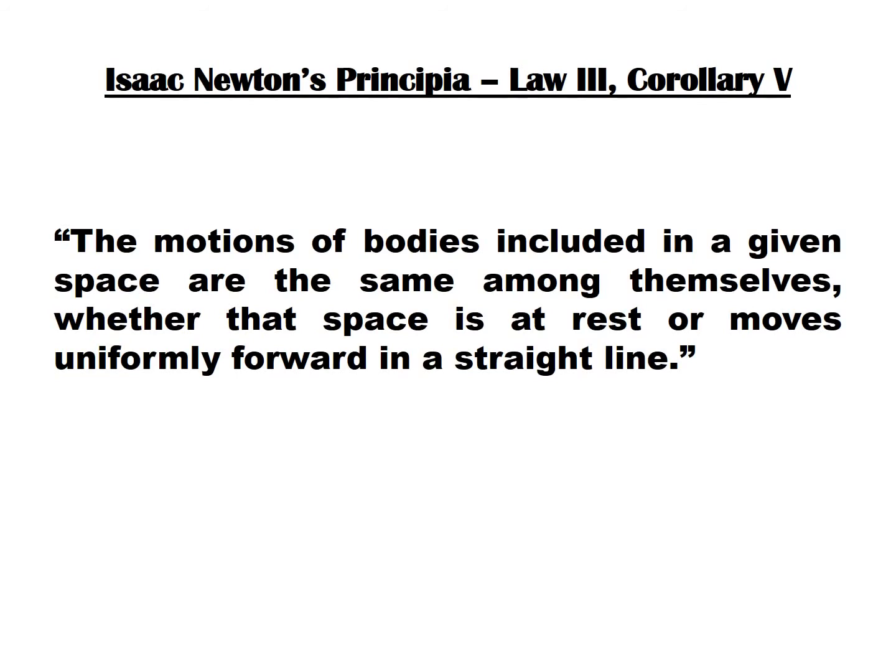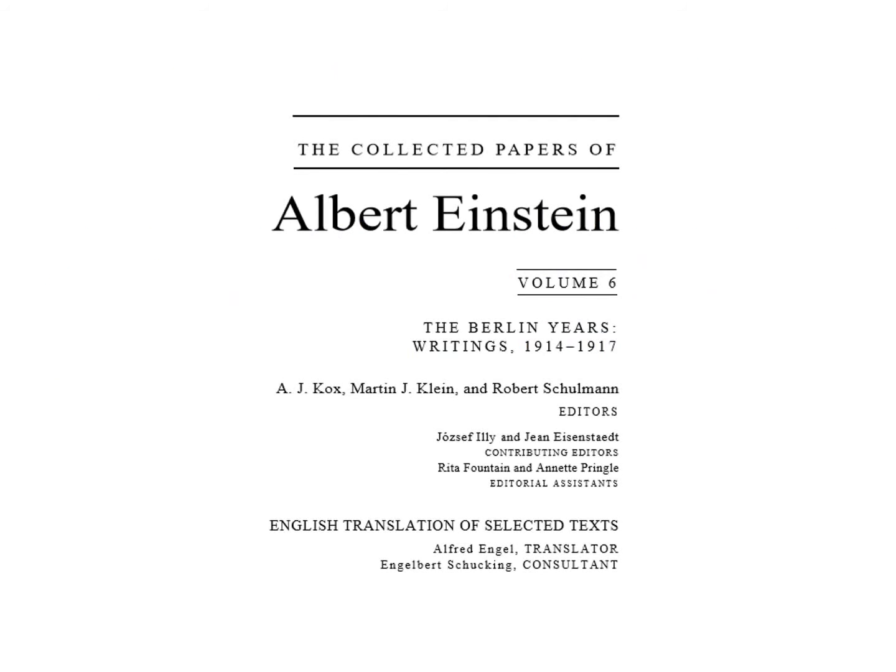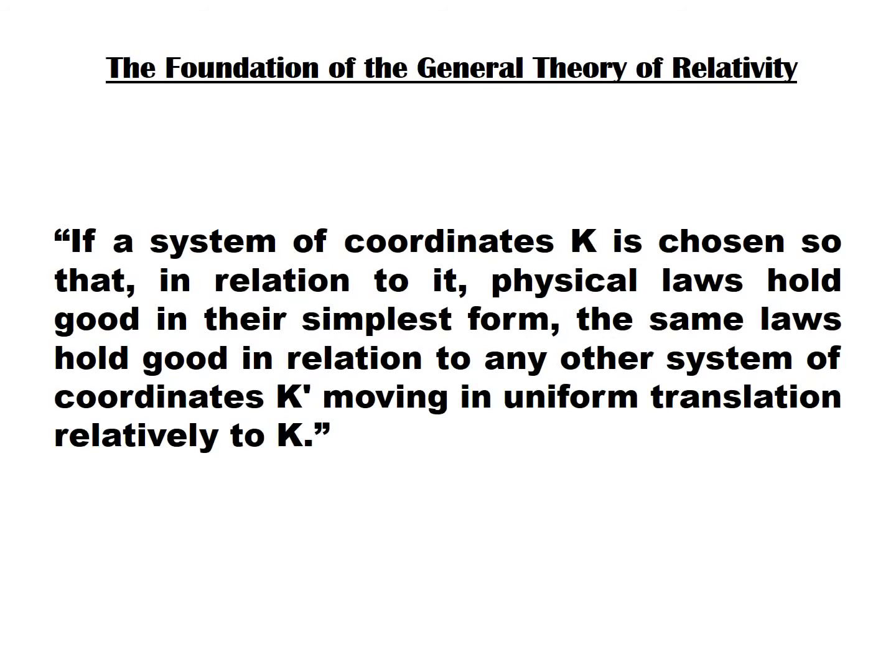Einstein himself provides several definitions in his various papers. In his paper, The Foundation of the General Theory of Relativity, Einstein gives this description: if a system of coordinates k is chosen so that, in relation to it, physical laws hold good in their simplest form, the same laws hold good in relation to any other system of coordinates k1, moving in uniform translation relatively to k. He provides a slightly modified description in his 1916 book.